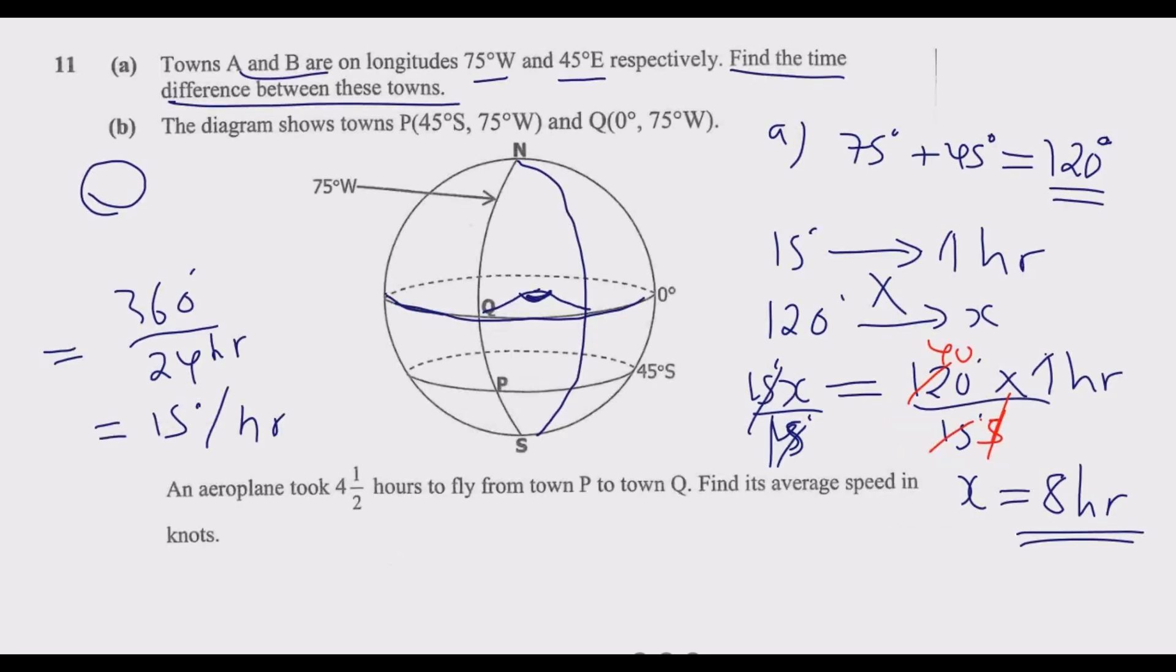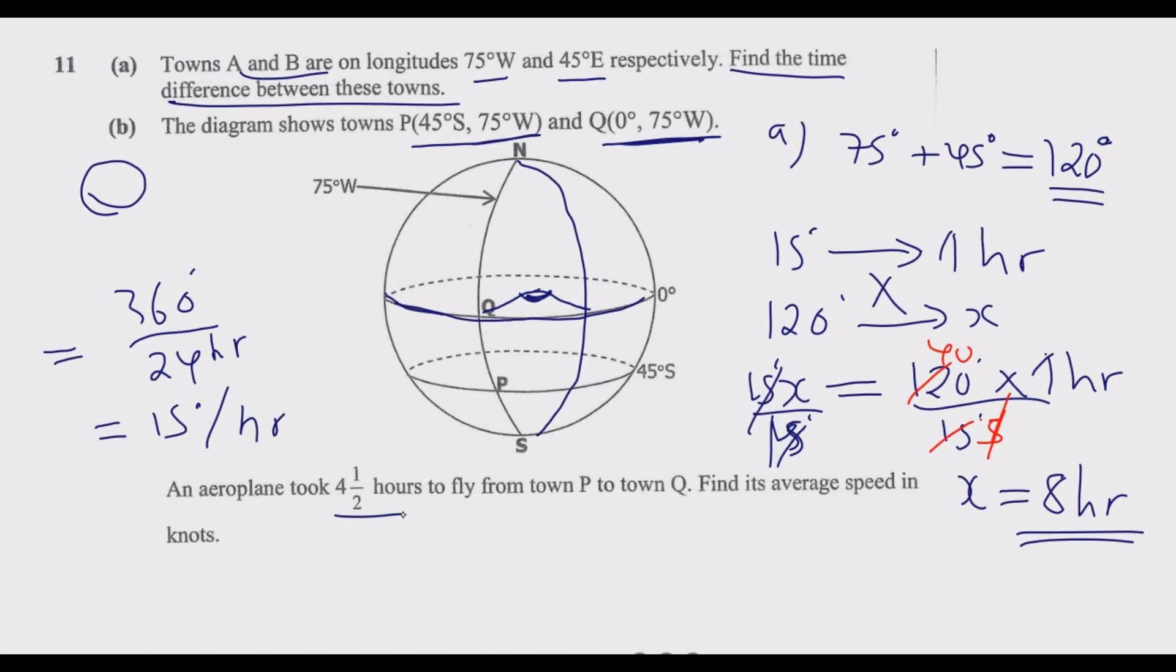Then we look at part (b). The diagram shows towns P and Q. An airplane took four and a half hours to fly from town P to town Q. Find its average speed in knots, which is nautical miles per hour. We know that speed is given by distance over time. The first thing that we need to find is distance because time has been given to us. Time is 4.5 hours.